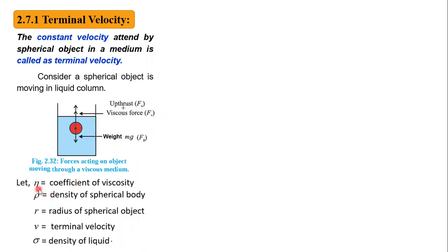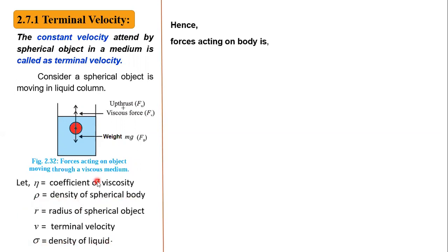Let me define the variables: eta is the coefficient of viscosity, rho is the density of the spherical body, r is the radius of the spherical object, v is the terminal velocity, and sigma is the density of the liquid.